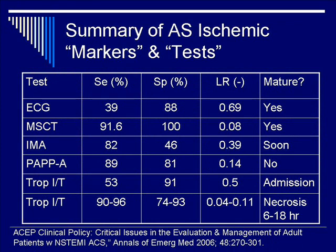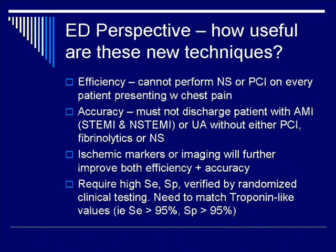The summary of all potential biomarkers and tests shows that MSCT is currently the most mature and ready for use. IMA may soon be a possibility, whereas PAPPA remains far on the horizon. From the ED perspective, these new techniques are needed because we cannot perform PCI on every patient. If an ischemic biomarker proves accurate, it should be used without hesitation.